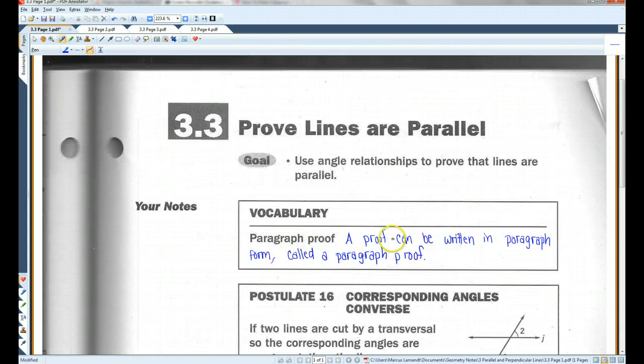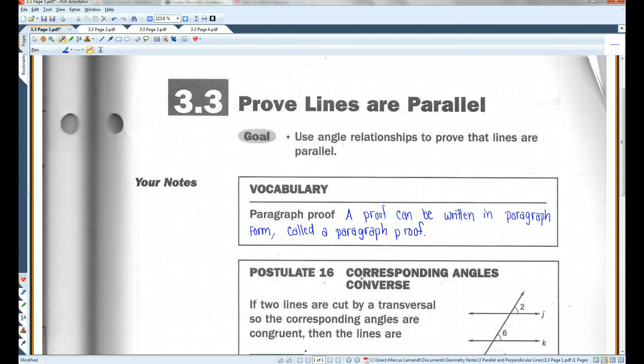There is another way to write a proof called a Paragraph Proof. A Paragraph Proof is basically just a proof written in paragraph form. Those of you who end up taking pre-calculus or any higher level math, this is the form you will generally be writing proofs in. For this class, however, 90% of the proofs we do are going to be two-column proofs.